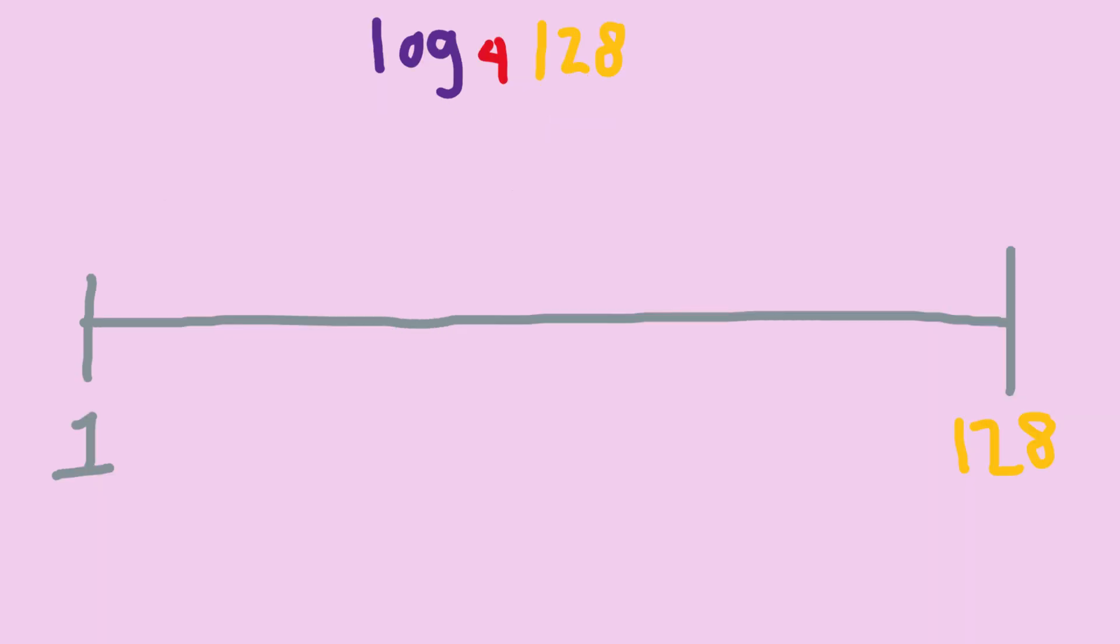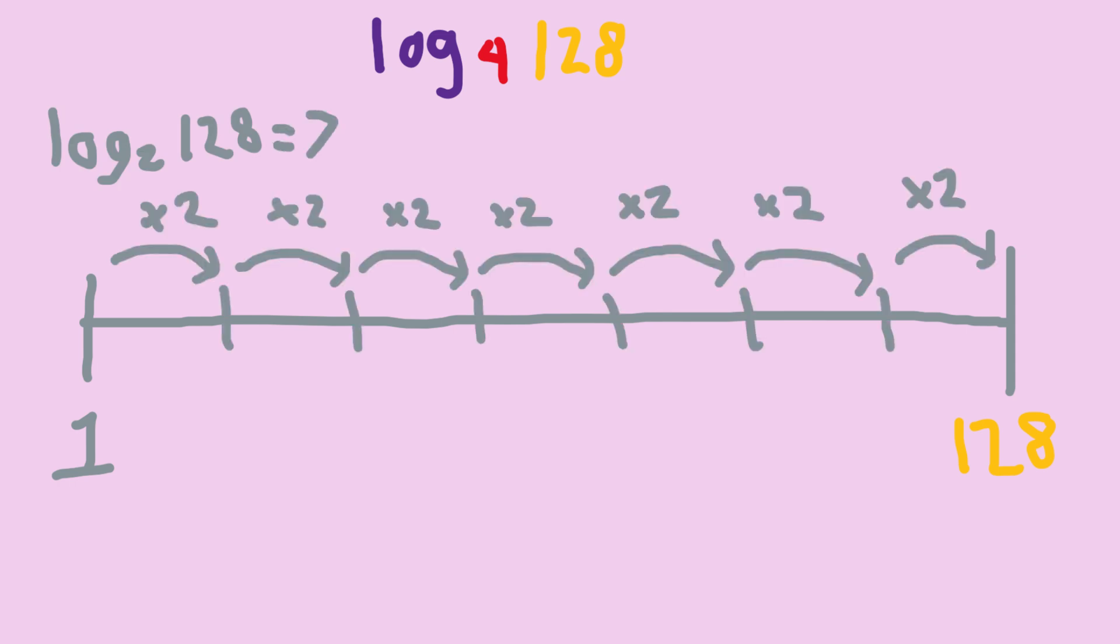What about log base 4 of 128? Here's one way to think about it. We know log base 2 of 128. That's 7. So, how many steps of times 2 are in one step of times 4? That's 2, or more abstractly, log base 2 of 4.